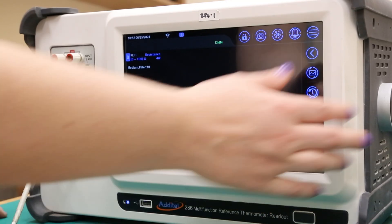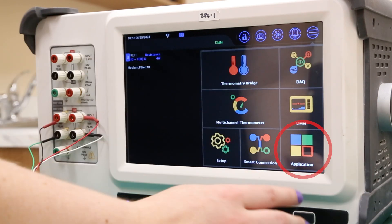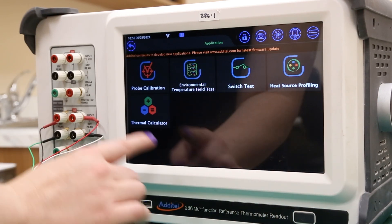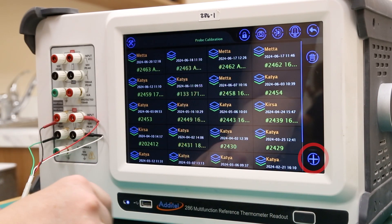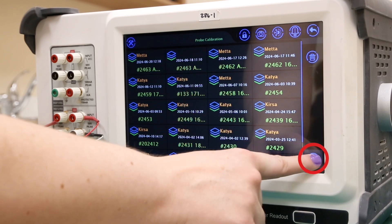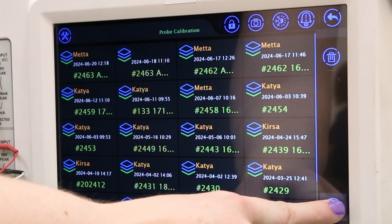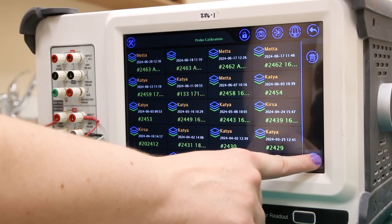Now we will set up the calibration test. From the 286 menu screen, select the application button, then probe calibration. Select the plus icon in the bottom right corner to add a new test. These tests are saved locally on the 286 and can be revisited at any point in the future.